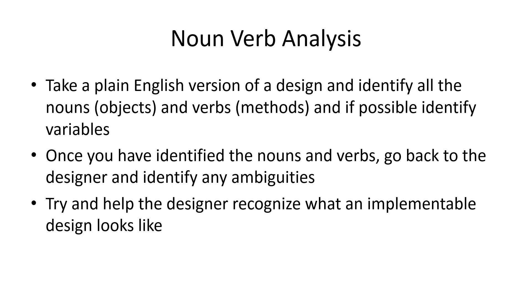When we get a design document, we want the designer to give us their plain English version of what they want. The idea is that we use something called noun-verb analysis. As a programmer — and you can do this with designers and artists as well — we try and use this to identify the kinds of things we want to understand. It's a pretty simple process, and I'll guide you through an example. The analysis is an iterative method of clarifying what the design should say, and it'll help you later in doing the software engineering design but also help iterate the design process. The idea is that we take the design and create something more palatable for a programmer to work from.